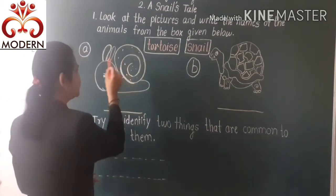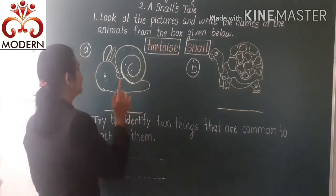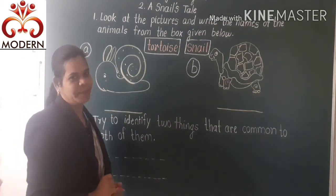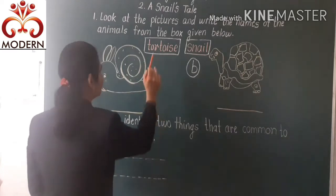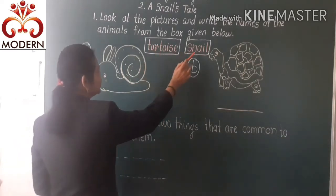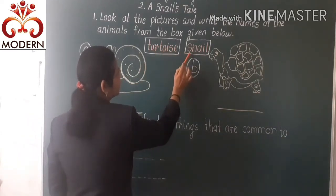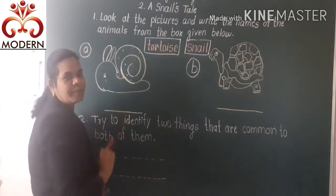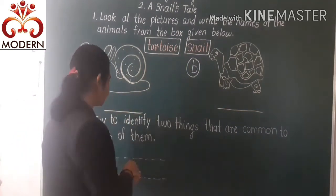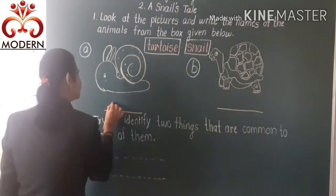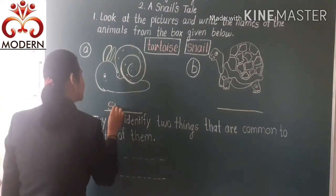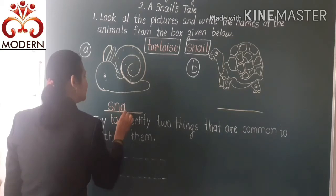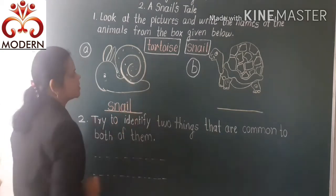What is this? This is a snail. Where is the snail? Right here — it is a snail. We write snail here.